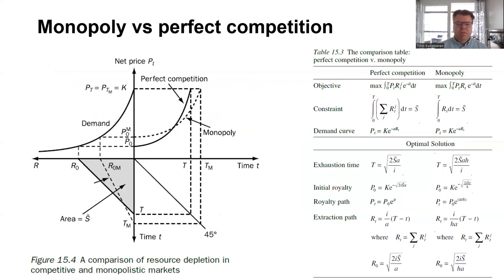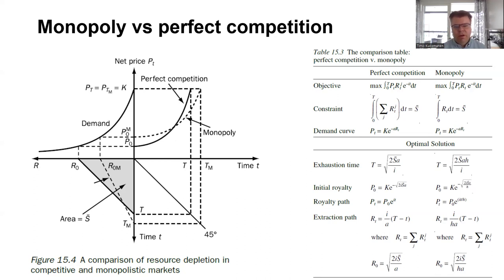This extraction model can be further complicated. Here is a comparison of how market power would influence extraction compared to perfect competition. Consider two types of situations: a finite reserve — think of an oil reserve — where in one case there is perfect competition with many firms able to extract oil and sell it to the market, and in another case a monopoly, such as a government nationalizing the oil reserves. It's an interesting question to see how a monopoly would influence things compared to a competitive market.